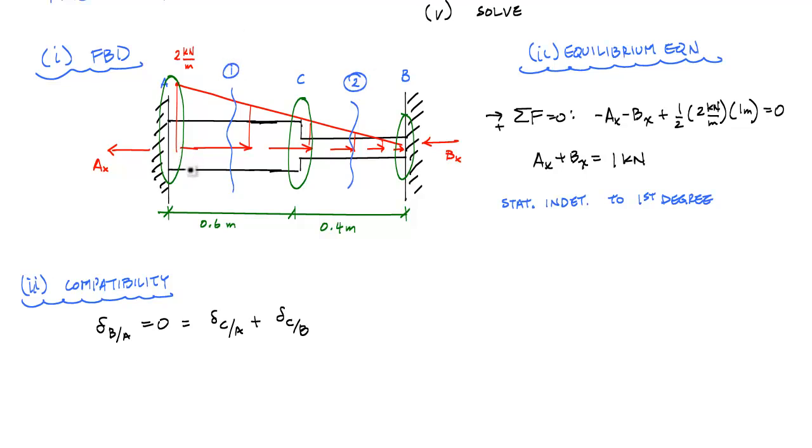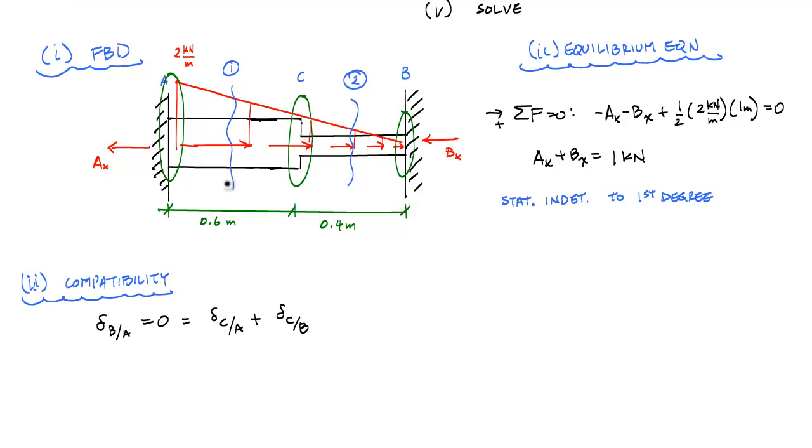Now because I have a distributed loading here, I know that my forces, my internal normal forces in each of these segments is not going to be constant. It's going to change with this distributed loading. And so I'm going to cut between each one and I want to calculate the internal loading within each segment. When I want to determine the axial deformation of each segment, I have to use the integral formulation.